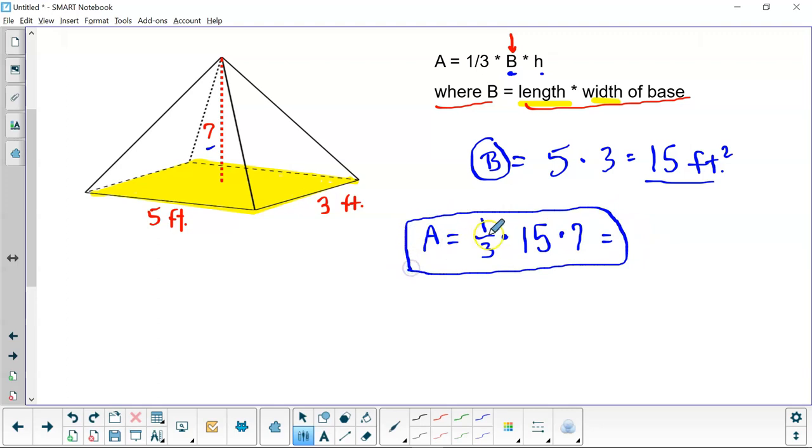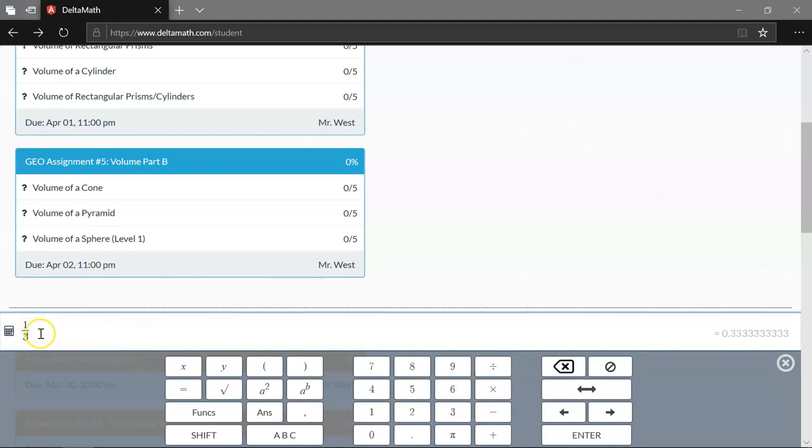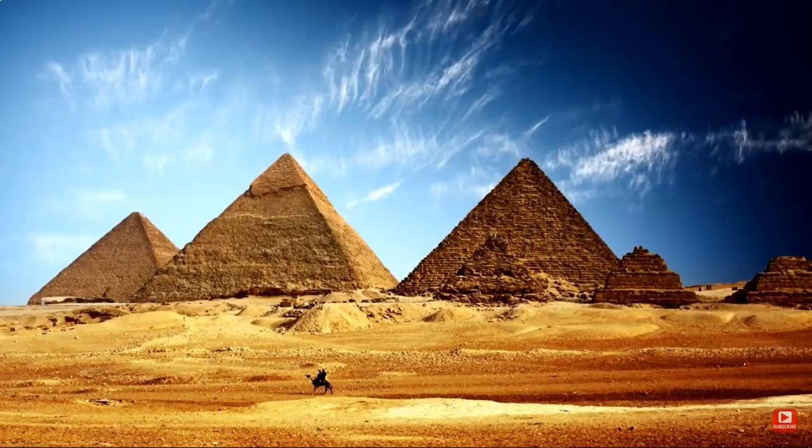Let's remember area equals one-third times 15 times 7. And so we said one-third times 15 times 7. I'm going to click in 1 divided by 3. And here's my fraction here. And I press the right arrow to get up beside it. Times our big B of 15 times our height of 7. And that equals... that we started yesterday.